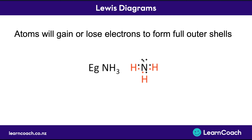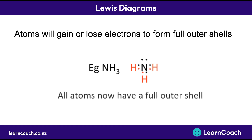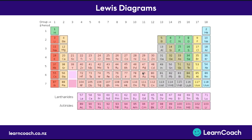You'll also notice, and it's common convention, to draw electrons in four pairs around an atom — a pair at the top, a pair on the left and the right, and a pair at the bottom. Now that all atoms here have a full outer shell, let's look at how we can quickly figure out how many outer electrons each atom has.